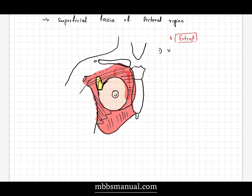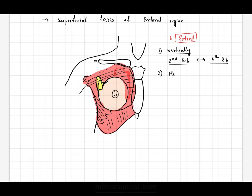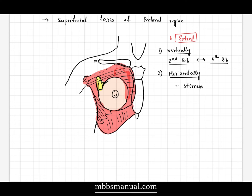Extent of the mammary gland: vertically, it extends from the second rib to the sixth rib. Horizontally, it extends from the lateral border of the sternum to the mid-axillary line.